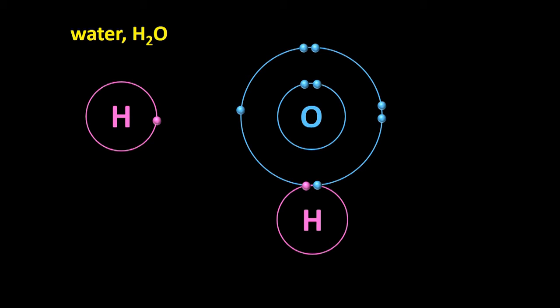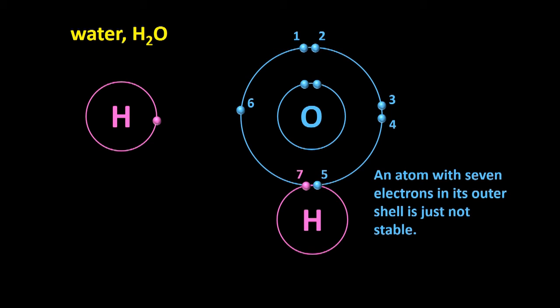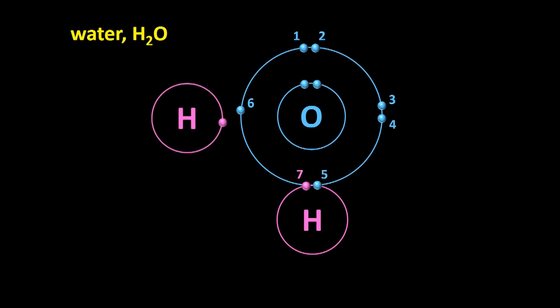However, the oxygen atom's outer shell can hold one more electron, since right now it has only seven - six blue and one pink. An atom with seven electrons in its outer shell is just not stable. That is, it's very reactive. If another hydrogen atom comes close, the two nuclei attract each other's electrons, and another bond is formed.